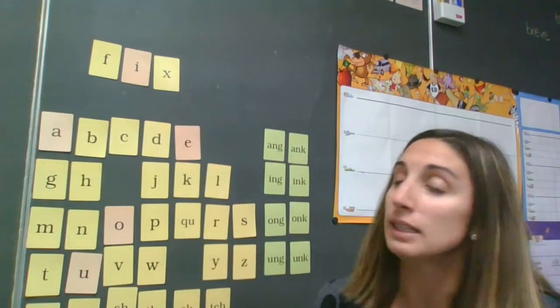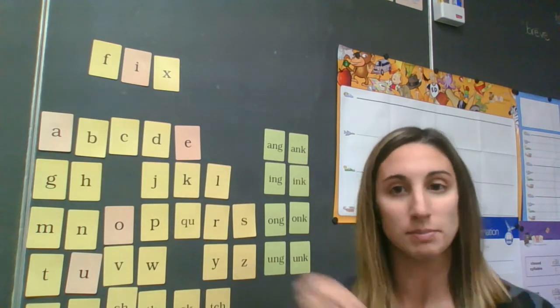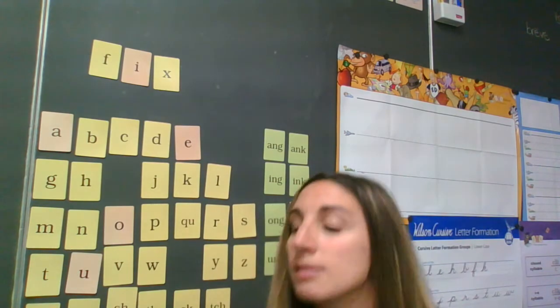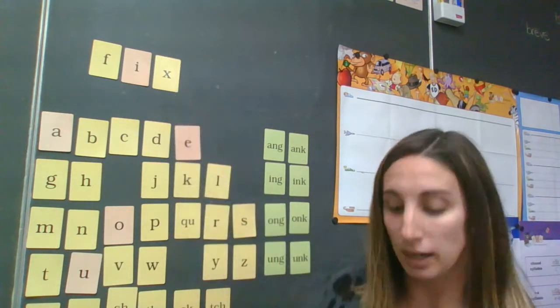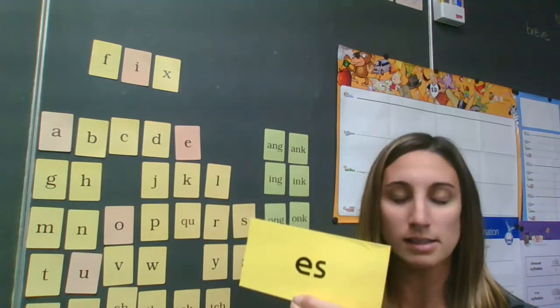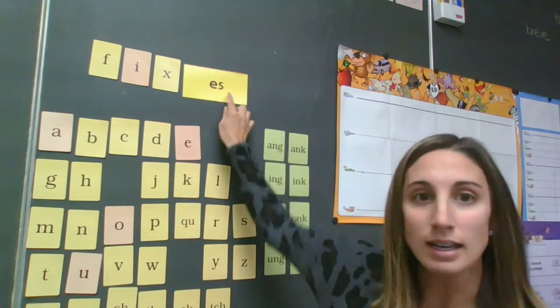Okay, the word behind me now is fix. This is also another action verb, right? Something that you can do. So, if I wanted to add a suffix, look at my base word. It ends with an X. Am I going to add S or am I going to add ES? What do you think? Right. To make it fixes, we're adding ES.